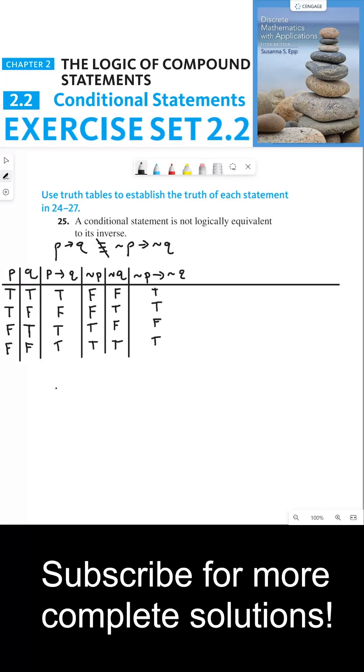And now if you compare column 3 with column 6, you can see that the truth values are not the same. And so because the truth values are not the same, this means that these two statement forms are not logically equivalent, which means that 25 is true. Thanks everyone, and I'll see you in the next video.